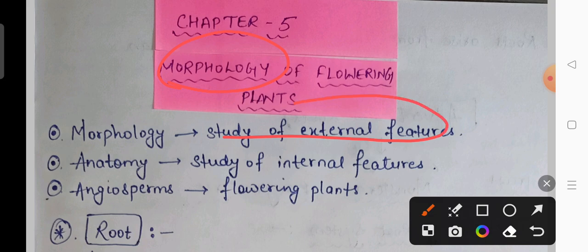Morphology means the study of external features — for example, root, stems, flowers, fruit, and leaf. These are all external structures, and we are going to study these external features in this chapter.